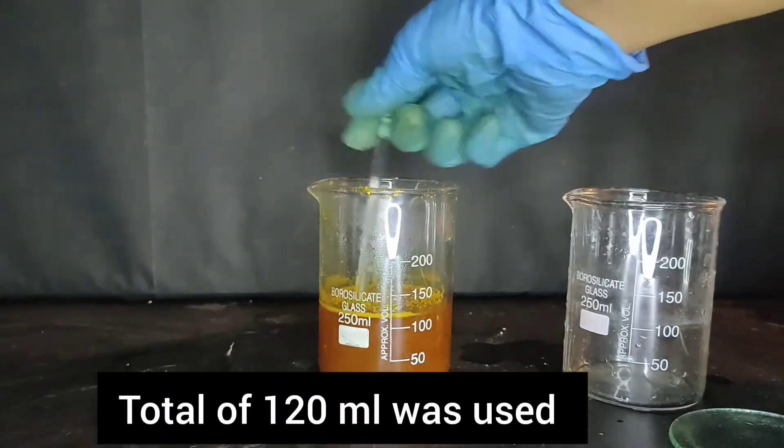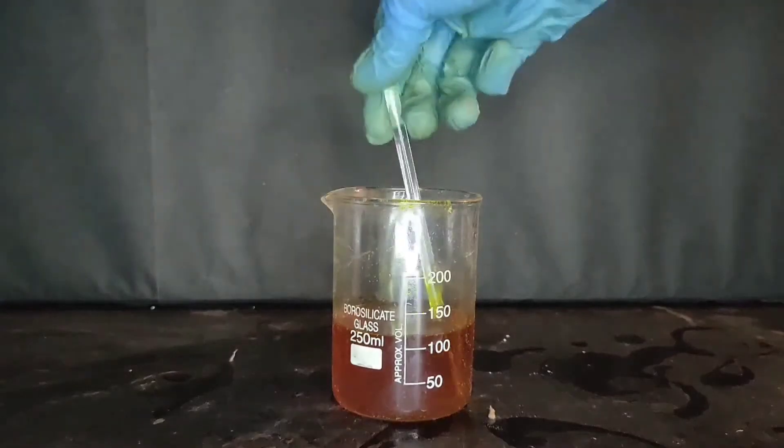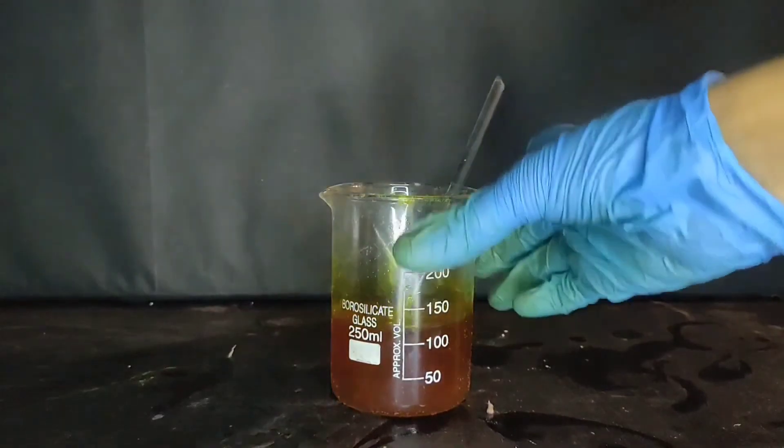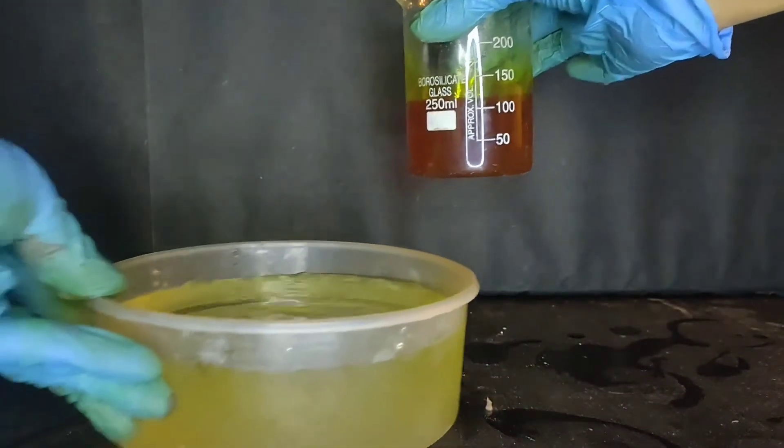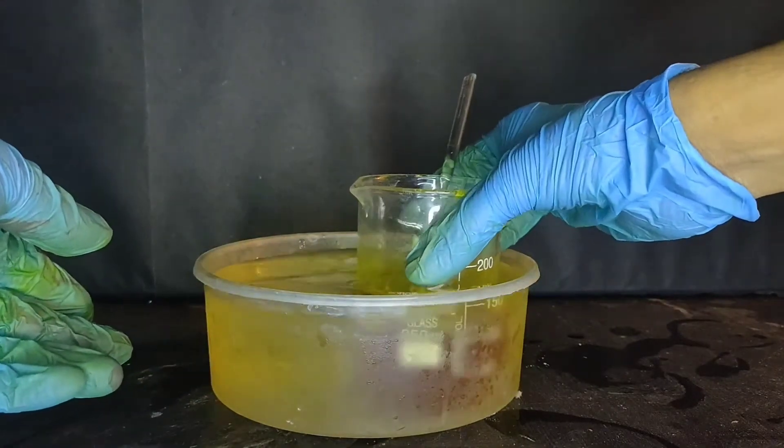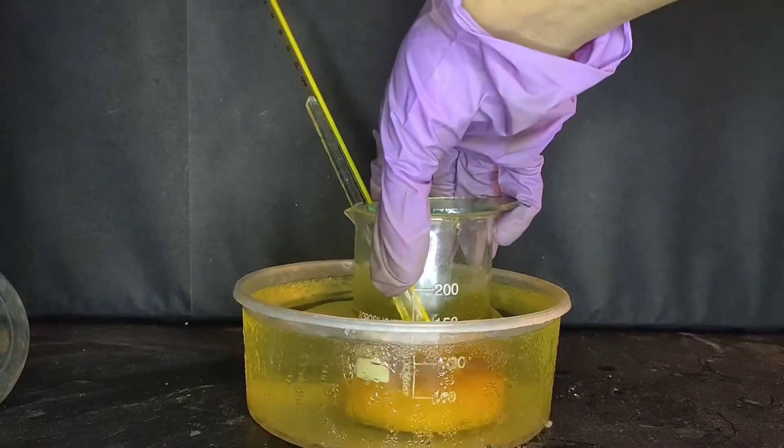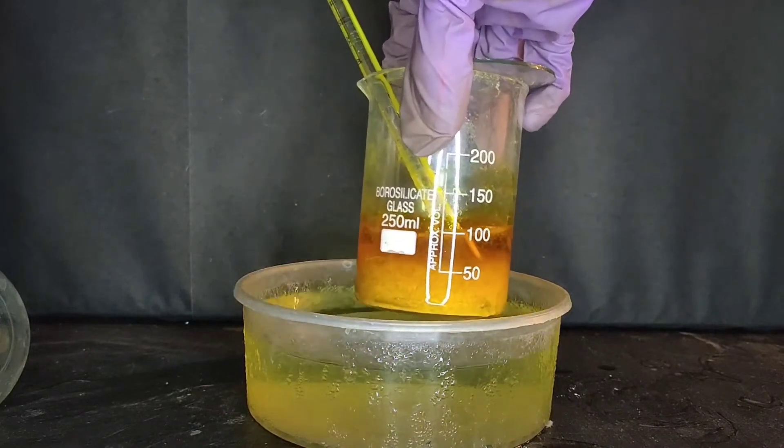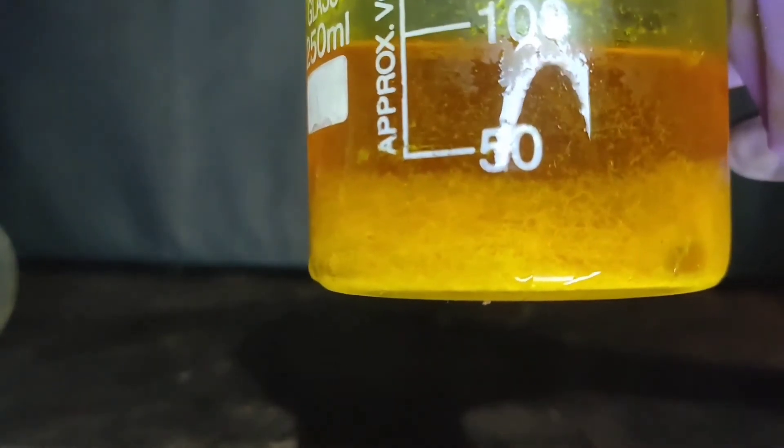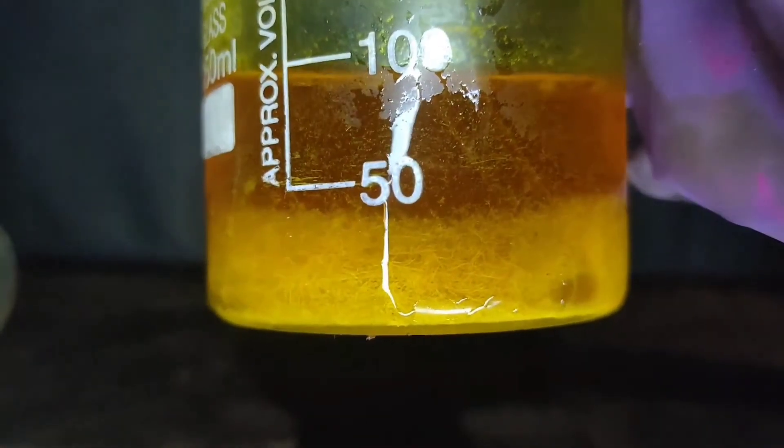In total, 120 ml of solution was used. Now, when everything has been dissolved, this beaker is put into an ice bath to chill. On recrystallization, yellow needle-shaped crystals of para-nitro aniline were formed, which were filtered off using Buchner funnel.